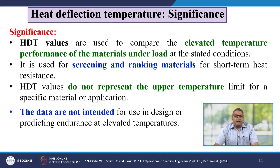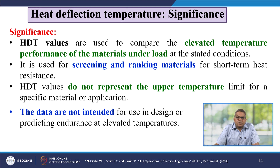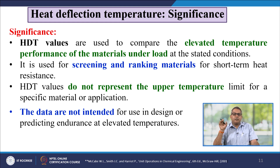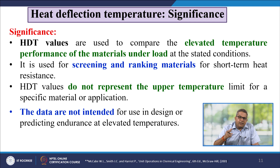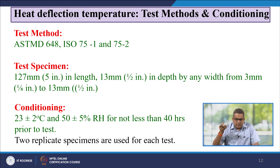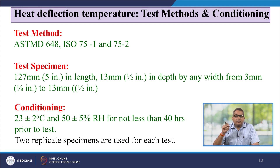The significance of HDT: these values are used to compare elevated temperature performance of materials, especially under load. It is used as a screening and ranking of material for short-term heat resistance. HDT values do not represent the upper temperature limit for a specific material application, and the data are not intended for use in design or predicting endurance at elevated temperature. Standard test methods applicable include ASTM D648, ISO 75-1 and 75-2.